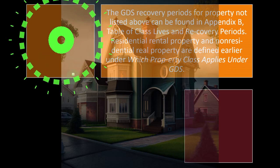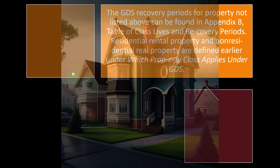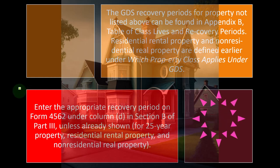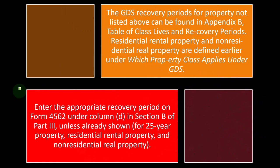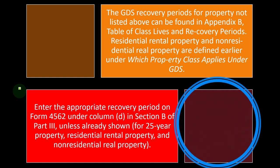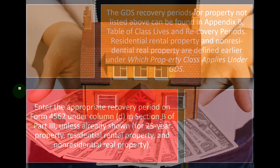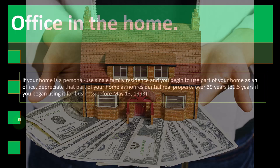GDS recovery periods for property not listed above can be found in Appendix B — the table of class lives and recovery periods. Residential rental property and non-residential real property are defined earlier under which property class applies under GDS. Enter the appropriate recovery period on Form 4562. Software helps with this categorization to actually populate Form 4562, build the depreciation tables, and pull that information into the relevant forms such as Schedule C. Under Form 4562, Column D in Section B of Part 3, unless already shown for 25-year property, residential rental property, and non-residential real property.